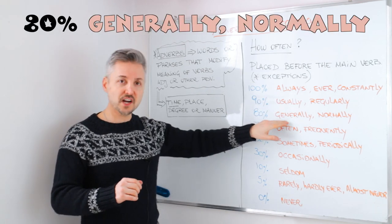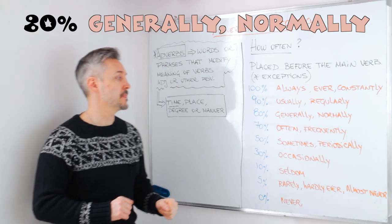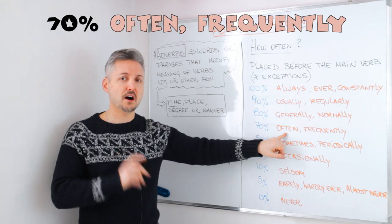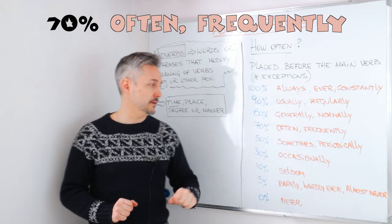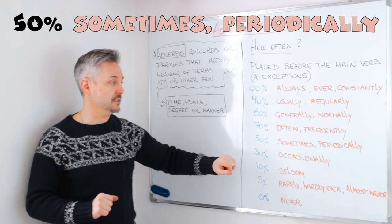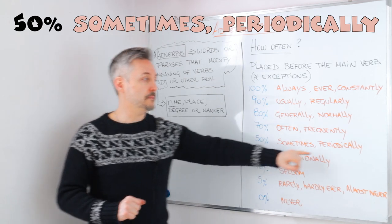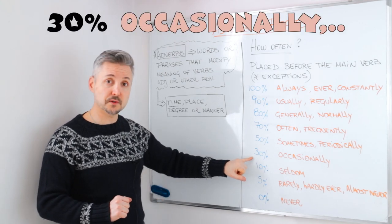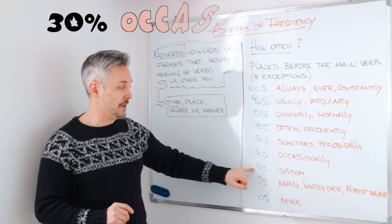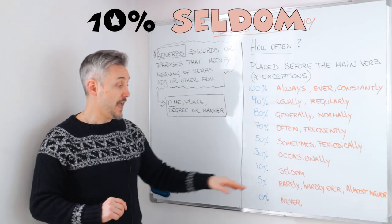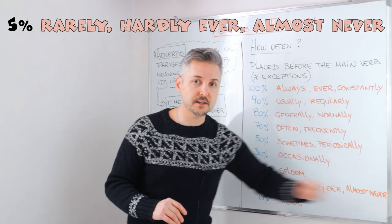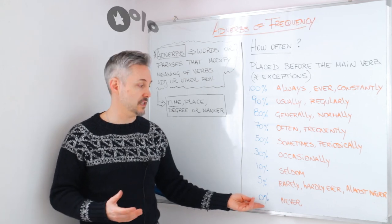80% is 'generally' and 'normally.' 70% is 'often' — there are two pronunciations, you can say 'often' or 'often,' it's your choice — and 'frequently.' Then we have 50% with 'sometimes' and 'periodically.' Then 30% — 'occasionally.' 10% is 'seldom,' and 5% is 'rarely,' 'hardly ever,' and 'almost never.' And 0% is 'never.'